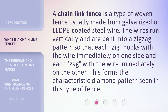A Chainlink Fence is a type of woven fence usually made from galvanized or LLDPE-coated steel wire. The wires run vertically and are bent into a zigzag pattern so that each zig hooks with the wire immediately on one side and each zag with the wire immediately on the other. This forms the characteristic diamond pattern seen in this type of fence.